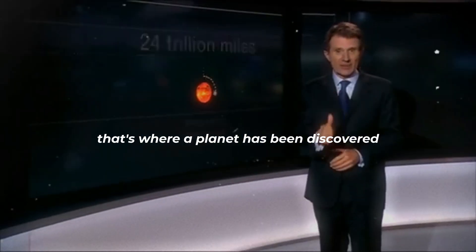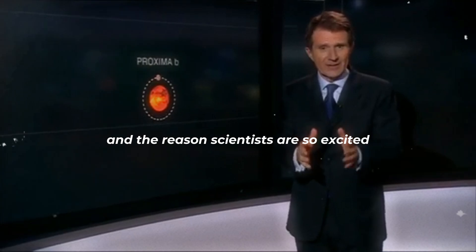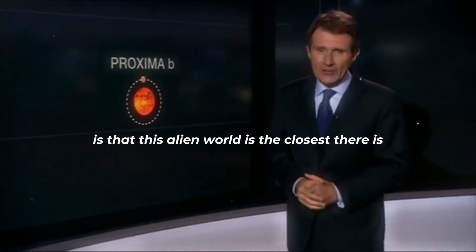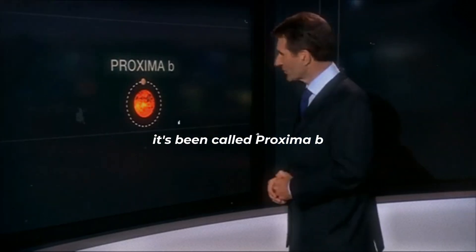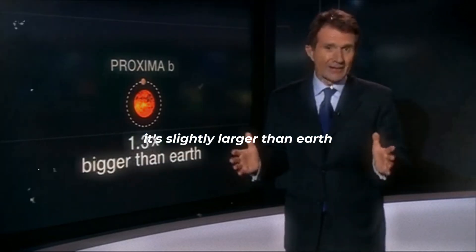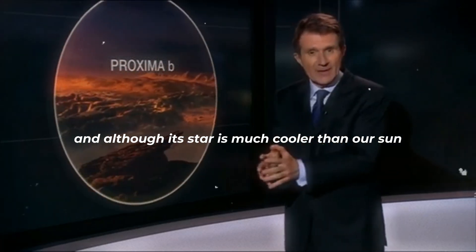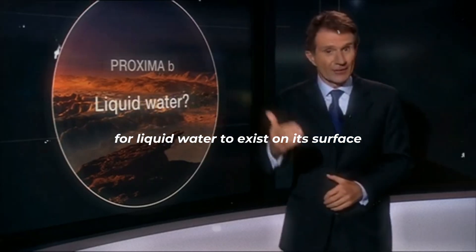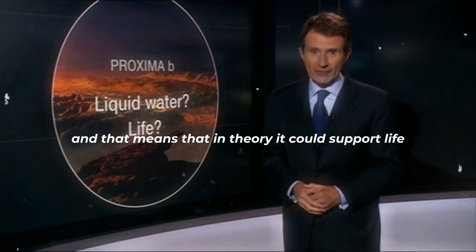That's where a planet has been discovered, orbiting around it, and the reason scientists are so excited is that this alien world is the closest there is outside our own solar system. It's being called Proxima B. It's slightly larger than Earth, and although its star is much cooler than our sun, the planet is in just the right zone for liquid water to exist on its surface, and that means that, in theory, it could support life.